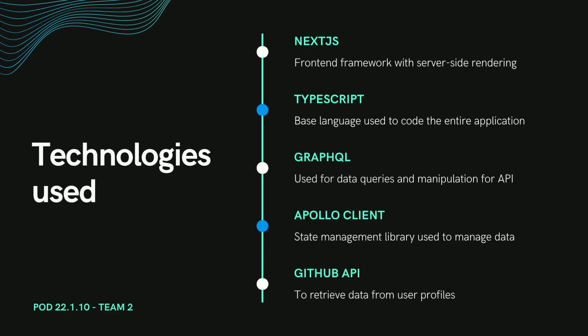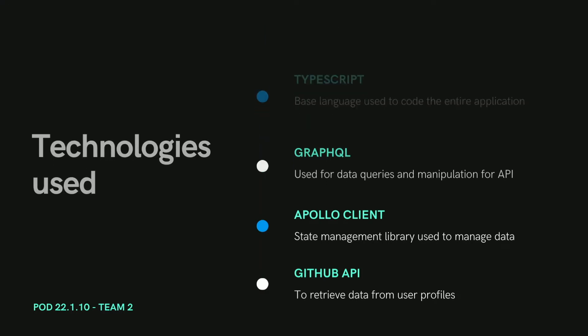The technologies we use for our project are the Next.js front-end framework. We use TypeScript as our base language for the entire application. We use GraphQL for making our data queries and for our API. We also use Apollo clients for managing and interacting with our data. Lastly, we use the GitHub API to retrieve data from user profiles.